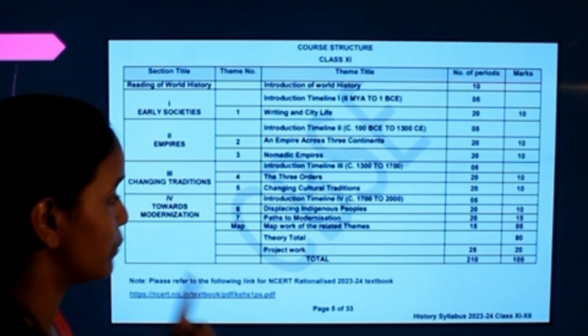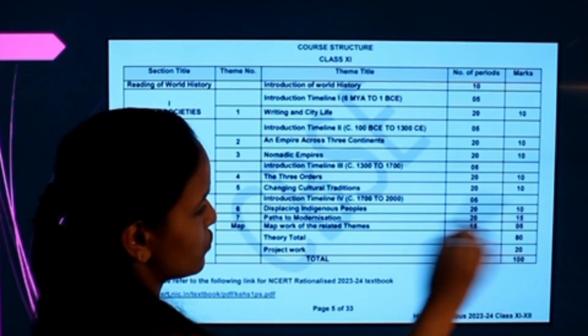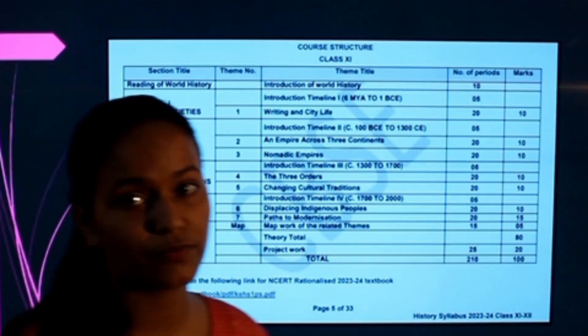If we move towards modernization, then there are Theme numbers 6 and 7. Displacing Indigenous Peoples of 10 marks and Paths to Modernization is 15 marks. So there is special focus on 15 marks.